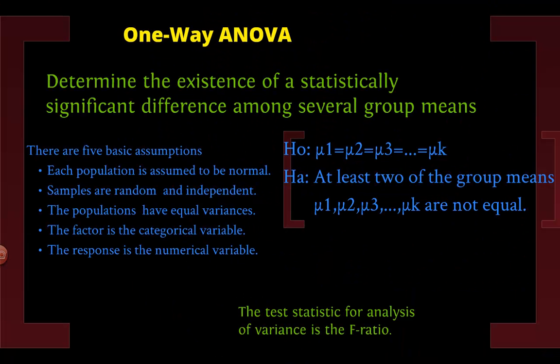So in a one way ANOVA we are trying to see if there is a difference between several groups and the statistic as I said is the F ratio or the F distribution.